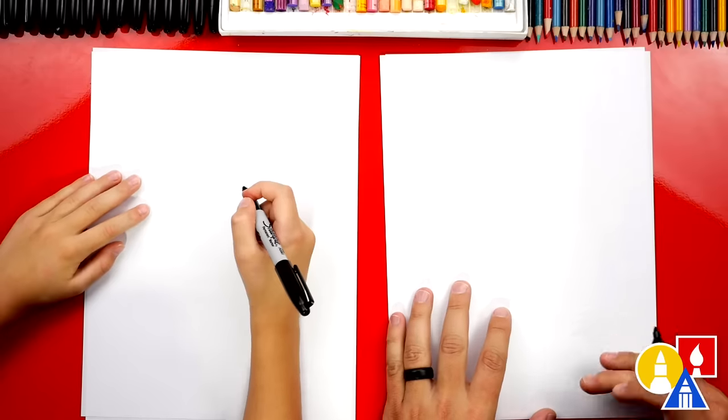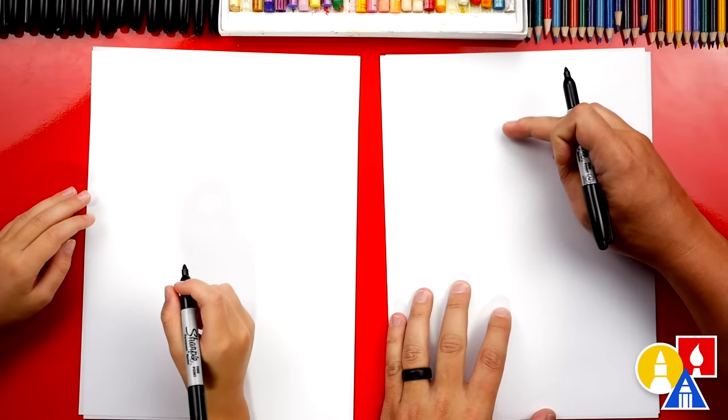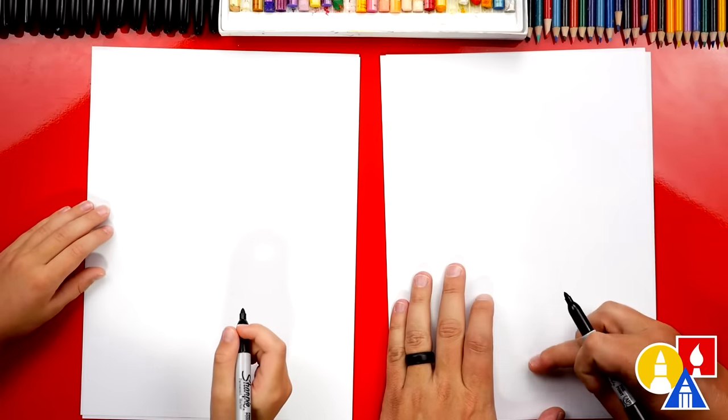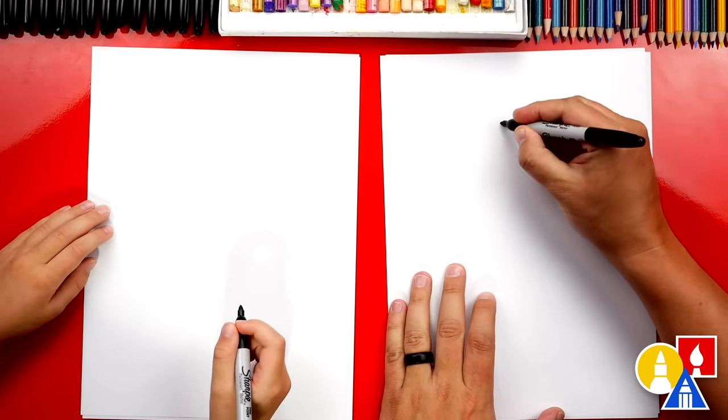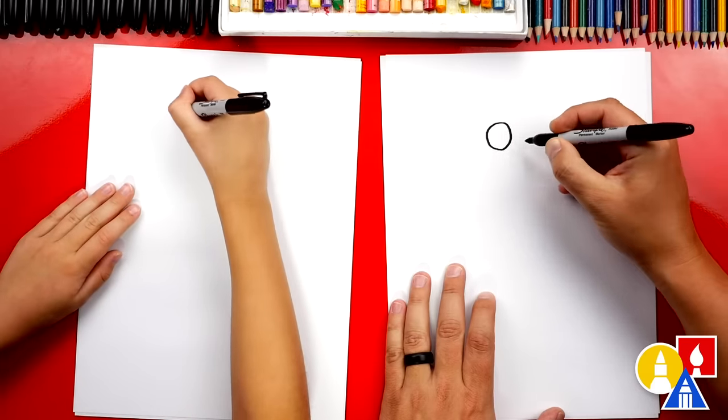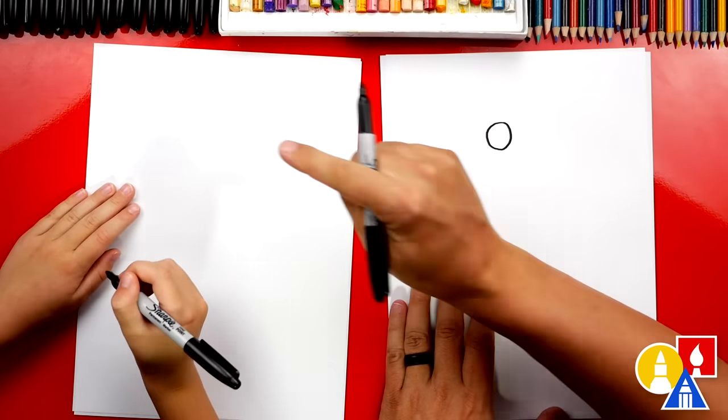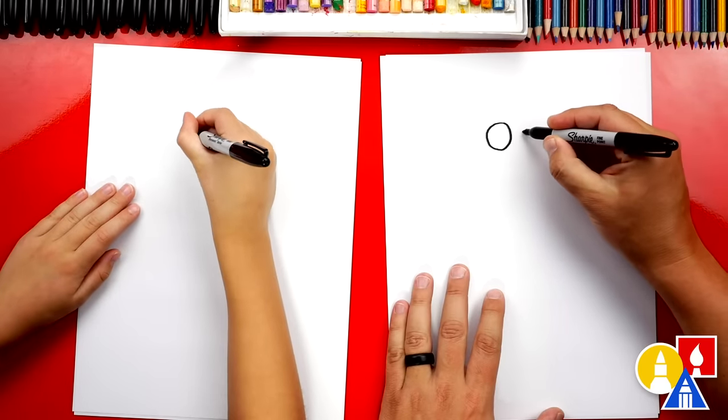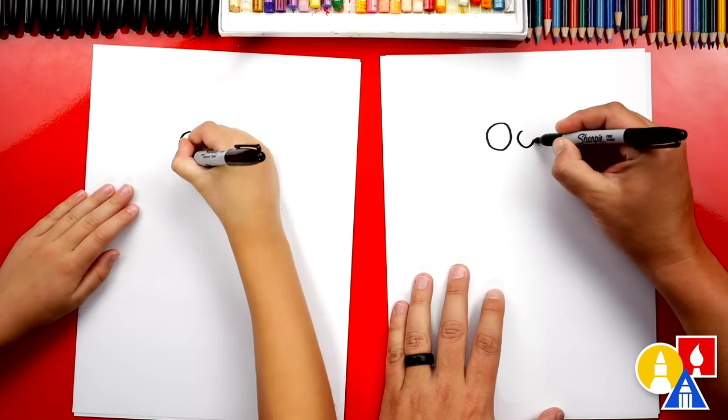Let's first draw his eyes. We're going to draw them towards the top of our paper so that we have room for his whole body. We're going to draw one big circle for the left eye, and then maybe a little lower, another one that's smaller right next to it.